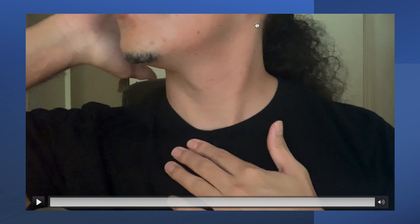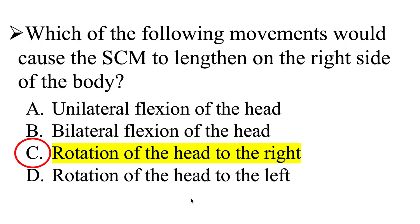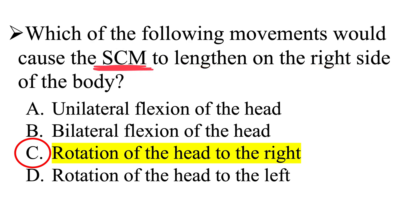You can also see that my left sternocleidomastoid is now in a shortened position when rotating right. So the right side is lengthened when I rotate my head to the right. The correct answer is C — rotation of the head to the right — which lengthens the right sternocleidomastoid.